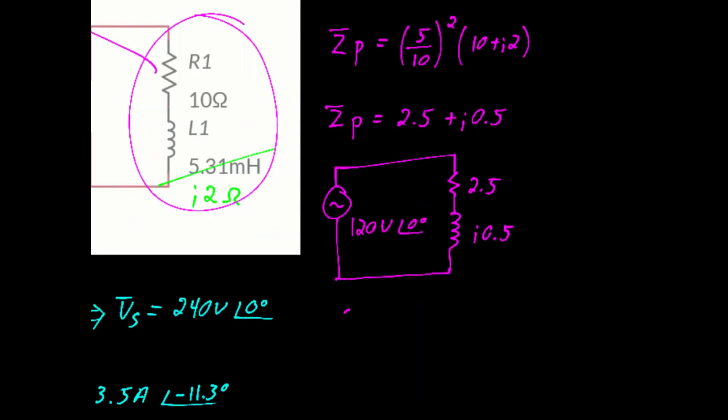You'll remember these equations, which tell us the complex power is equal to the voltage by the complex conjugate of the current, or the magnitude of the current squared multiplied by the impedance, or the magnitude of the voltage squared divided by the complex conjugate of the impedance. And I will leave it up to you to calculate what the power is at this point.